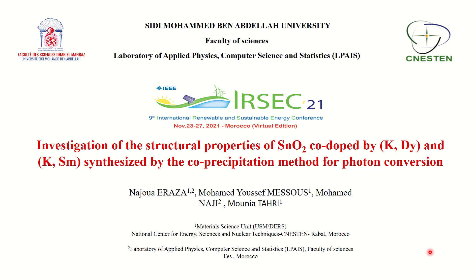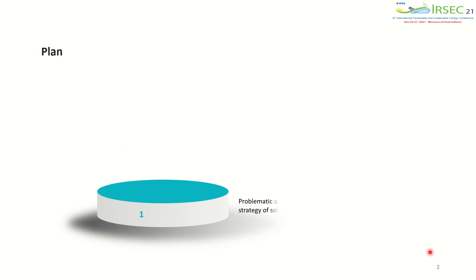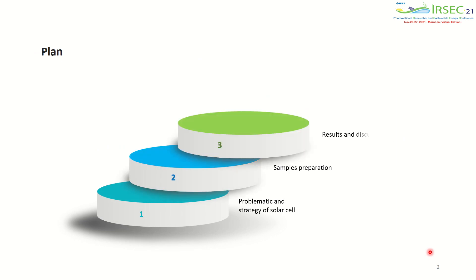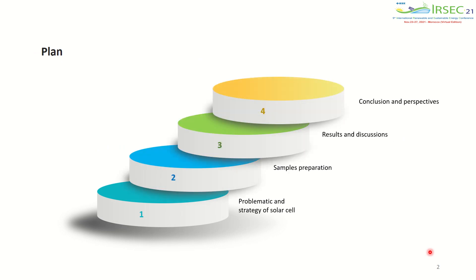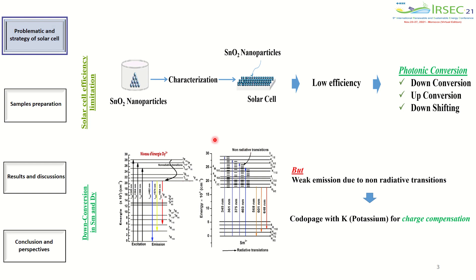Specifically, it is related to the investigation of the structural properties of SnO₂ co-doped with potassium-dysprosium and potassium-samarium, synthesized by the co-precipitation method for photon conversion. This presentation will take about five minutes and is structured as follows. The diagram in front of you illustrates our objectives.